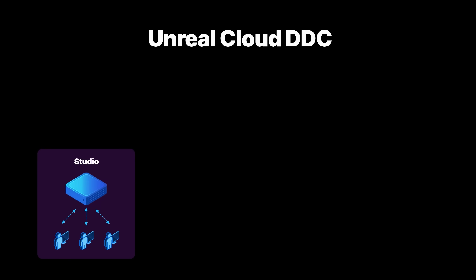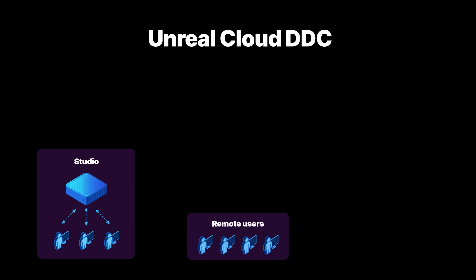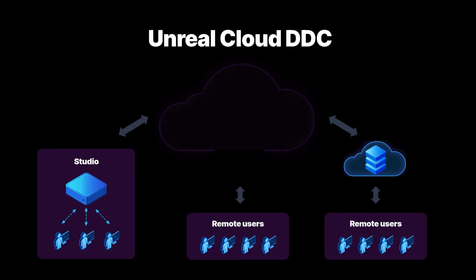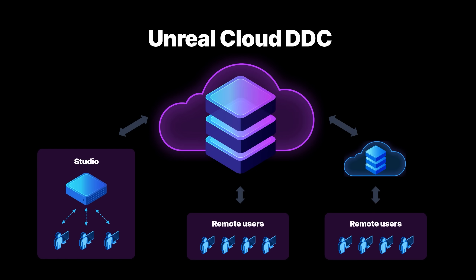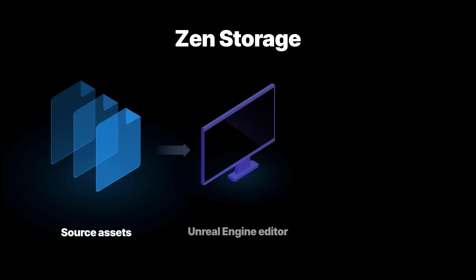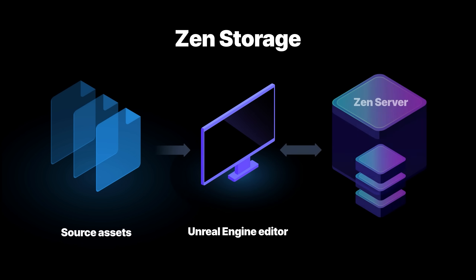New in this release is Unreal Cloud DDC, a self-hosted cloud storage system for the Unreal Engine derived data cache. Designed for distributed users and teams, it enables you to efficiently share Unreal Engine cached data across public network connections. Our local DDC also now uses a new server architecture, offering improved data conditioning performance, faster load times and PI workflows, and other benefits.